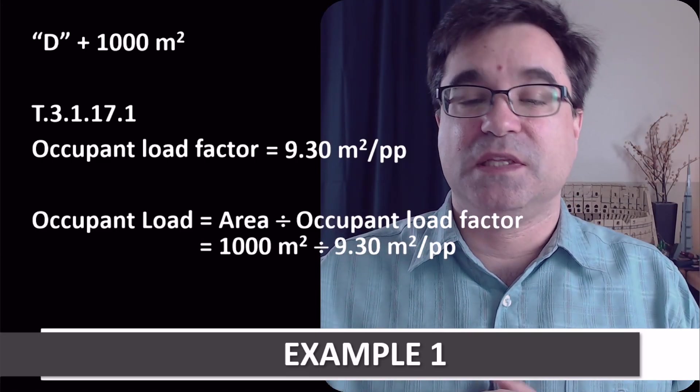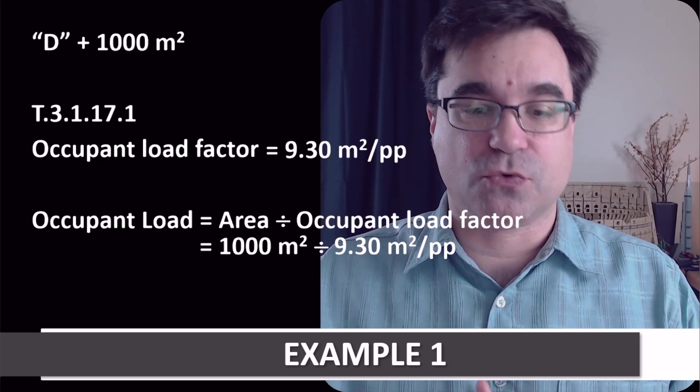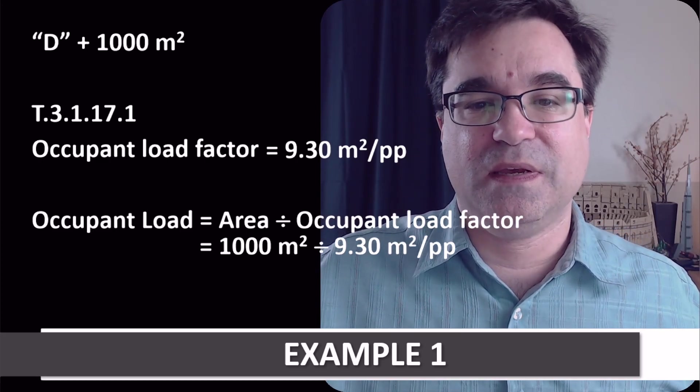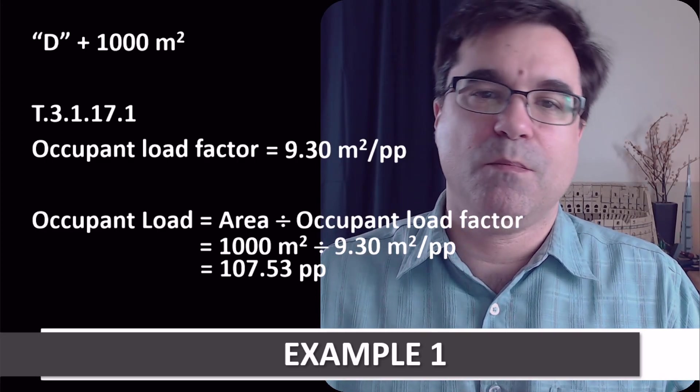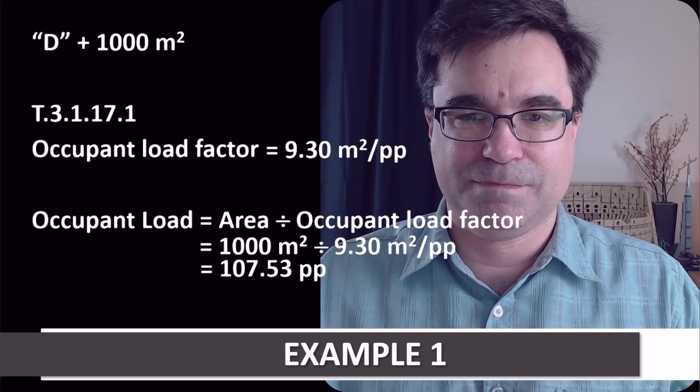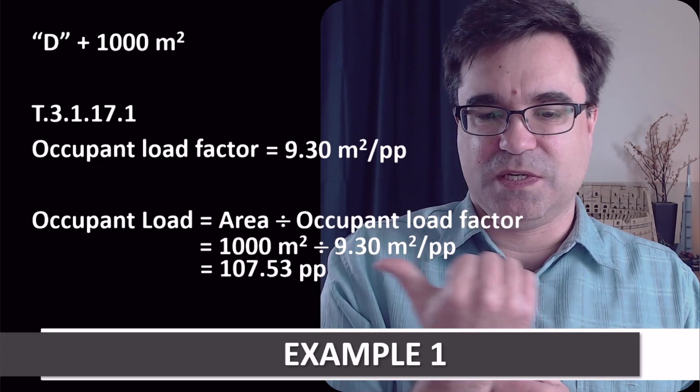1,000 square meters divided by 9.30 meters squared per person gives us 107.53 people. Okay? Just the way you see it right here.